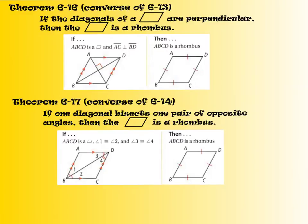Now we're going the opposite way. If we know that our diagonals are perpendicular, then we absolutely must have a rhombus.